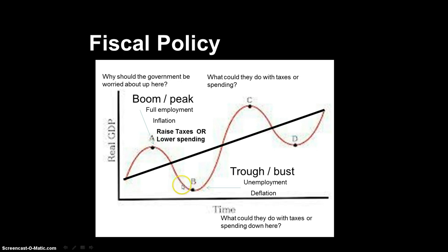Where we are in the economy right now is down in the bust area. If the government sees the economy in a bust or trough, one thing they can do is lower taxes, giving people and companies more money in their pockets to spend and hopefully stimulate the economy. Also, the government can raise its own spending by funding projects — for instance, one of Obama's favorite projects is renewable energy sources like wind power or solar power, giving small startup companies money to grow, build factories and windmills, create jobs, which leads to more spending and pulling us out of the recession.